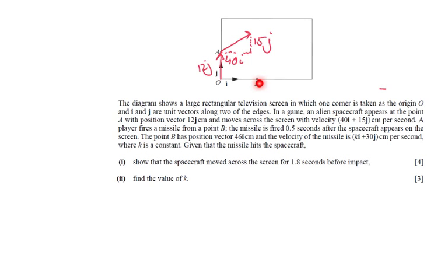A player fires a missile from point B, and the missile is fired half a second after the spacecraft appears. So the spacecraft is moving, and then after 0.5 seconds, you are firing a rocket towards the spacecraft. The point B has position vector 46I, and that makes sense because it's only horizontal. The velocity of the missile is KI plus 30J, so we don't know how much to the left or to the right, and then it goes up 30J. K is a constant.